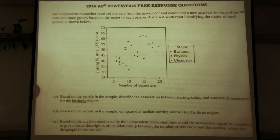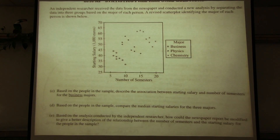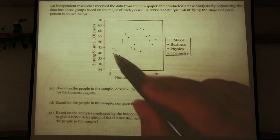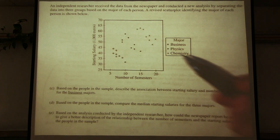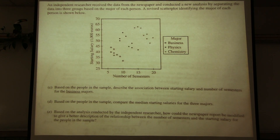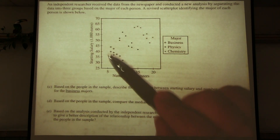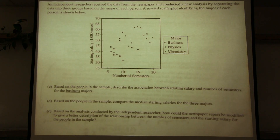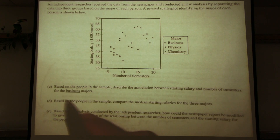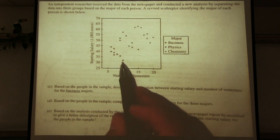Part C — the twist. An independent researcher received the data and conducted a new analysis by separating the data into three groups based on the major of each person. A revised scatterplot identifying the major of each person is shown. We've got business majors, physics majors, and chemistry majors. When you look at these separately, it's actually the opposite trend — a negative trend for all three majors.